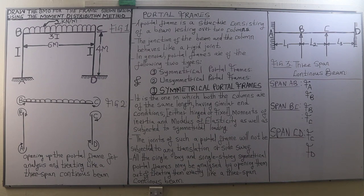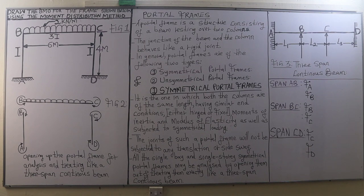First of all we need to know what a portal frame is. A portal frame is a structure consisting of a beam resting over two columns. Remember, beams are horizontal structural members whereas columns are the vertical structural members.